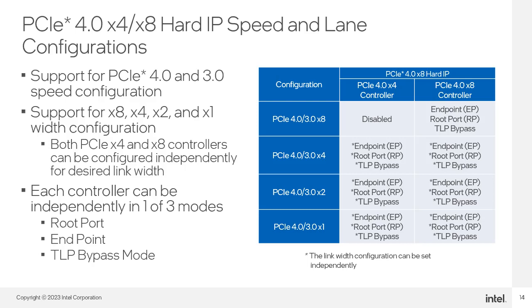While both controller types support by-four, by-two, and by-one width configuration, only the by-eight controller supports by-eight width configuration. But if you do not need a by-eight interface, you can use both controllers for by-four, by-two, or by-one operation. This is essentially what is done in E-series devices, with two GTS banks each implementing independent links. All speed and width configurations of the by-eight and by-four hard IP can be configured as endpoints, as root ports, or in transaction layer bypass mode.